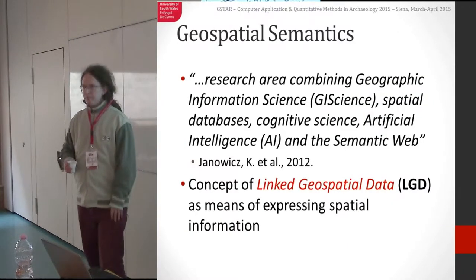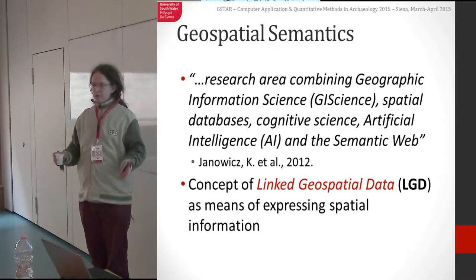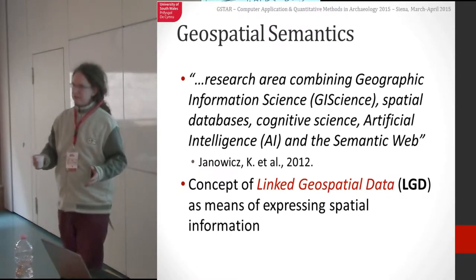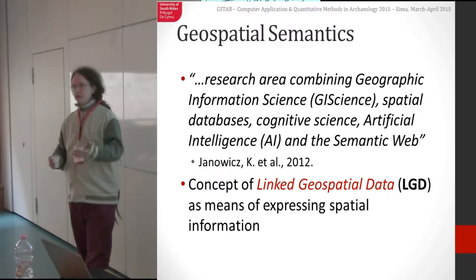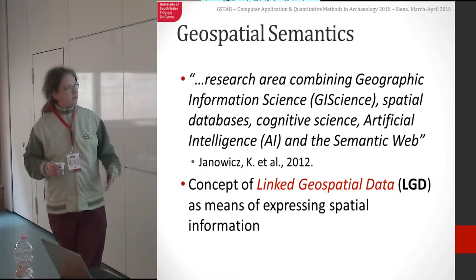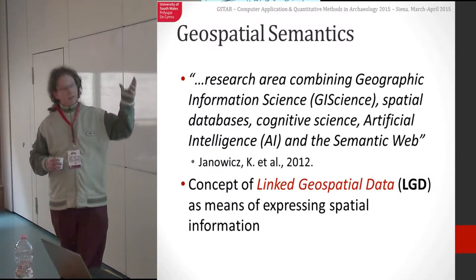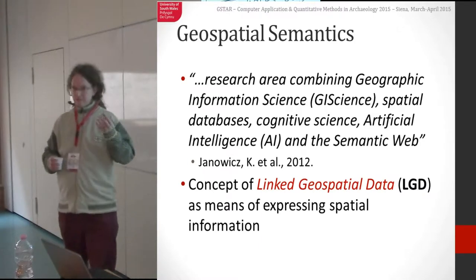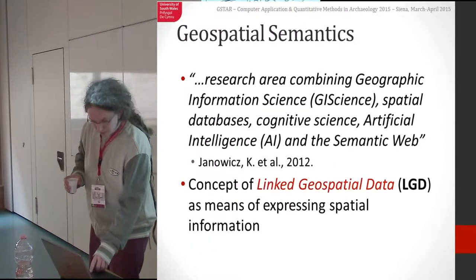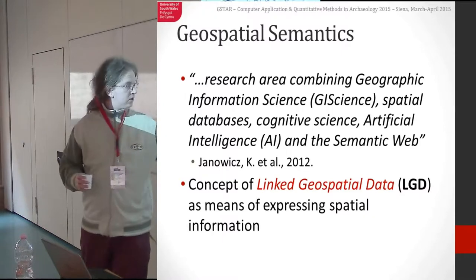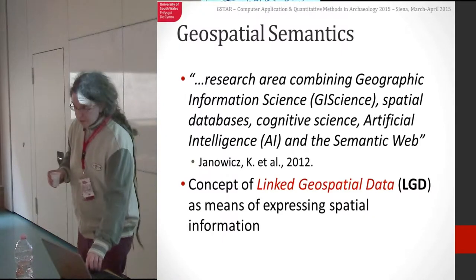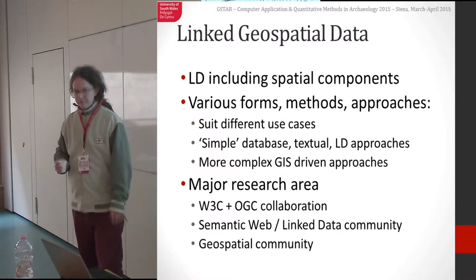So geospatial semantics — what are we talking about? It's basically the fusion of a whole bunch of different strands of research relating to the semantic web, as Janovich has said here, artificial intelligence. The key bits are the GIS, the geospatial, and the semantics. Importantly, we've got this concept of linked geospatial data as a specialism of linked data coming out of this as a way of expressing this information.